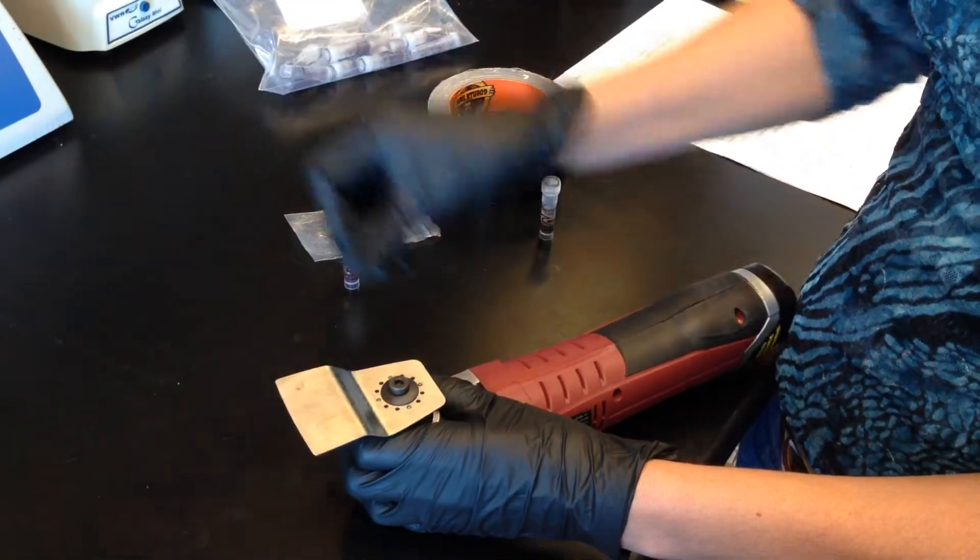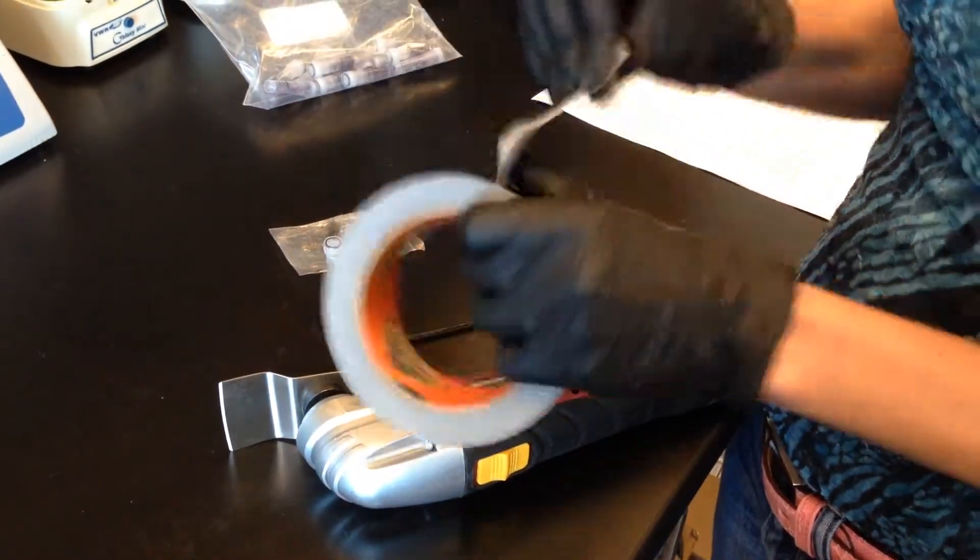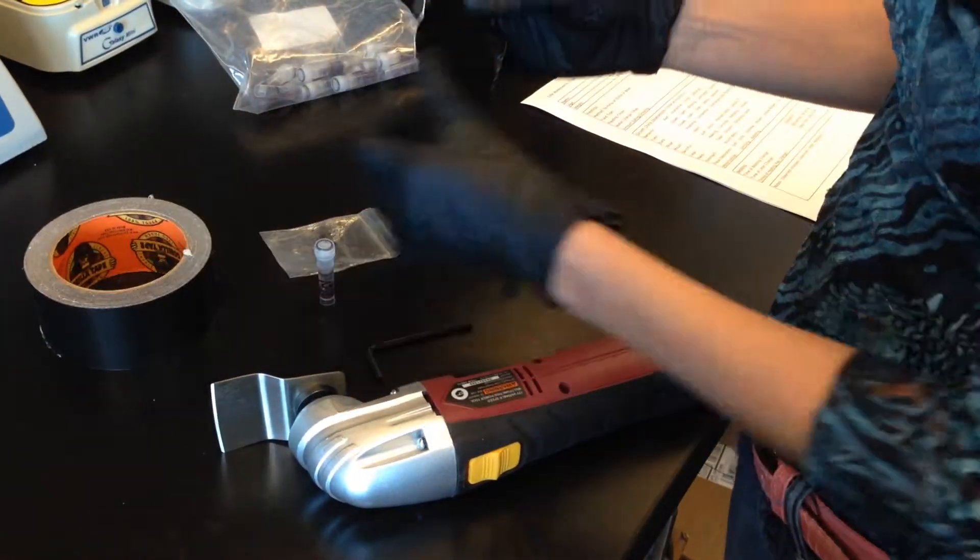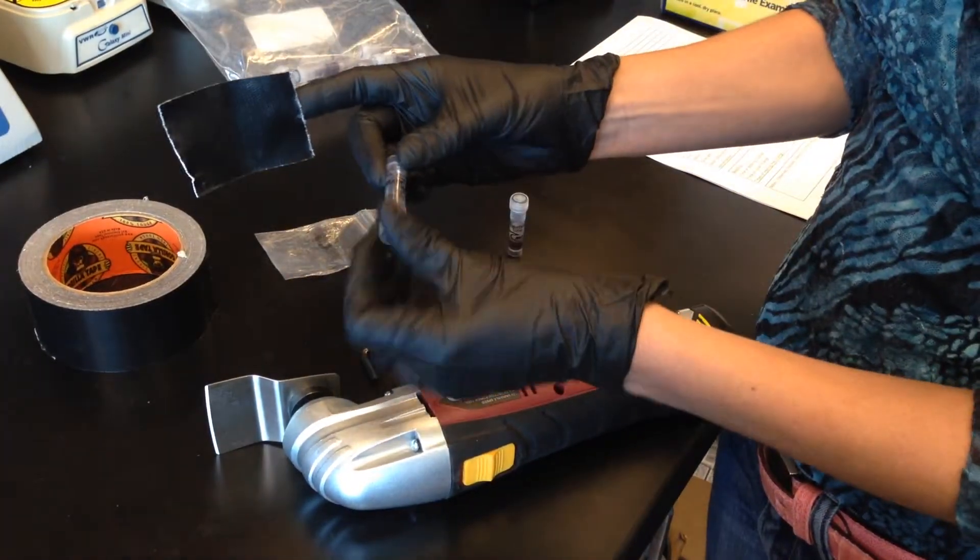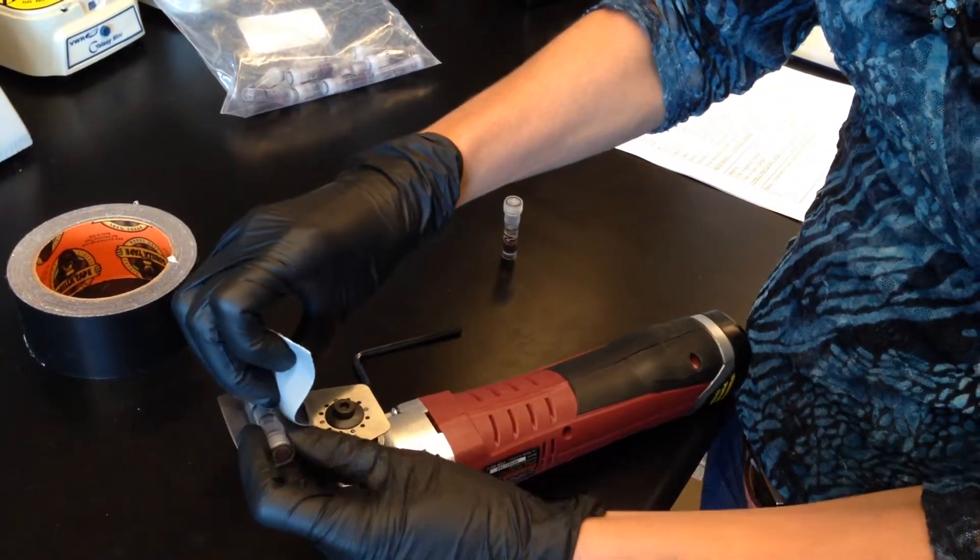You use this to tighten it, and then I'm just using this really strong duct tape—this one's called Gorilla Tape—to attach the Powerbead tube to the device.